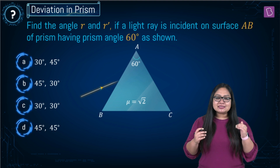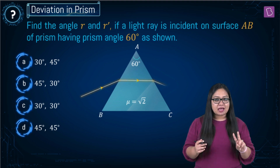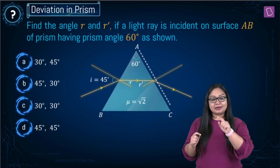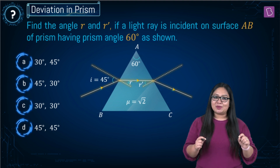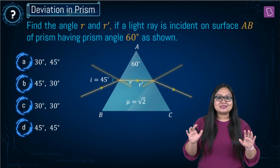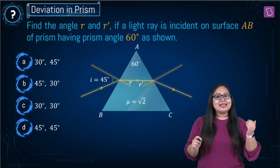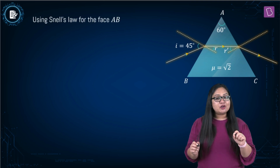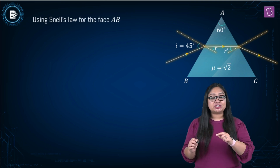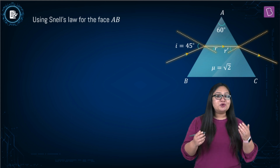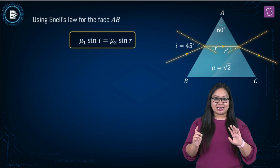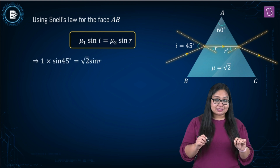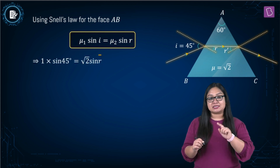We can see that there are two refractions happening — first at interface AB and then second at interface AC. Whenever there is a refraction, we can always apply Snell's law. So at the first interface AB, let's apply Snell's law. Angle of incidence is 45 degrees, angle of refraction is R. So mu1 sin i is equal to mu2 sin R: 1 times sin 45 degrees is equal to root 2 times sin R.